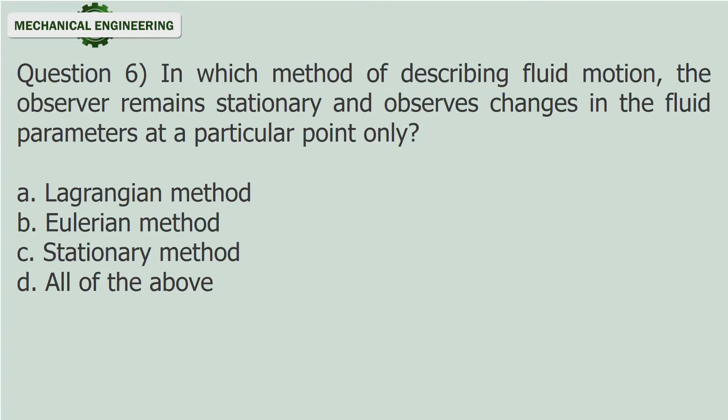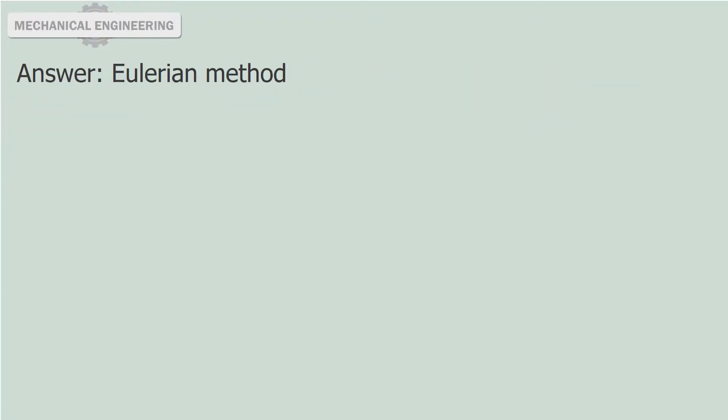Question 6. In which method of describing fluid motion does the observer remain stationary and observe changes in fluid parameters at a particular point only? A. Lagrangian Method, B. Eulerian Method, C. Stationary Method, D. All of the Above. Answer: Eulerian Method.